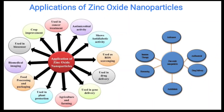Applications of zinc oxide nanoparticles: they are widely used in many industries, including cancer treatment, antimicrobial activity, anti-diabetic activity, drug delivery, gene delivery, agriculture and farming, plant protection, food processing and packaging, biomedical imaging, and biosensors. In therapy, they are used in immunotherapy, bio-sensing, anti-cancer, anti-bacterial, drug delivery, and anti-diabetic applications. These represent all the medicinal uses.